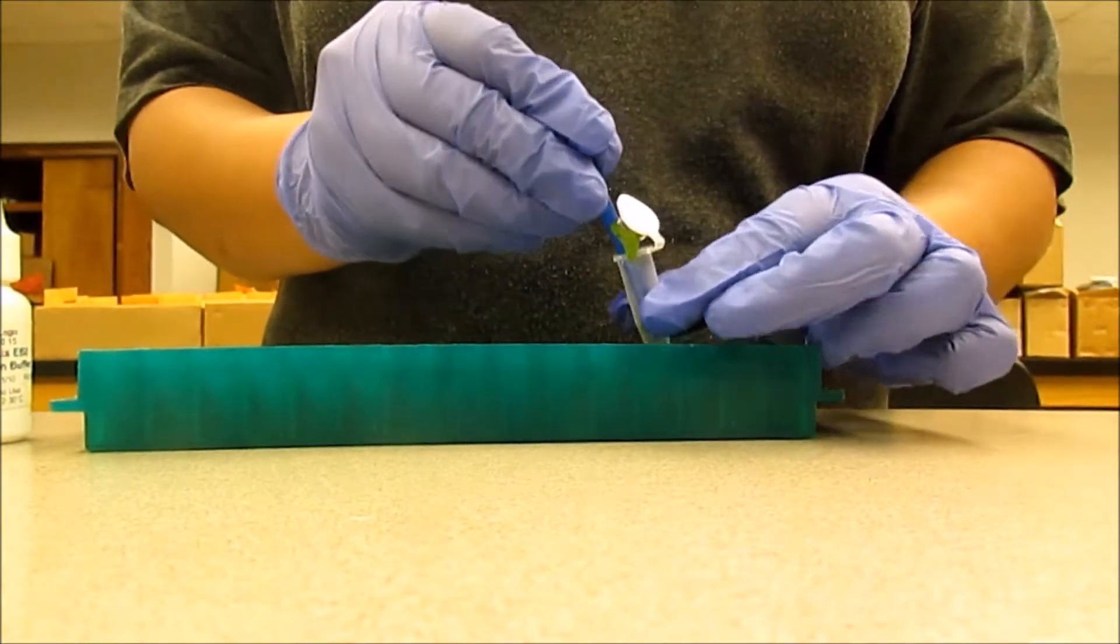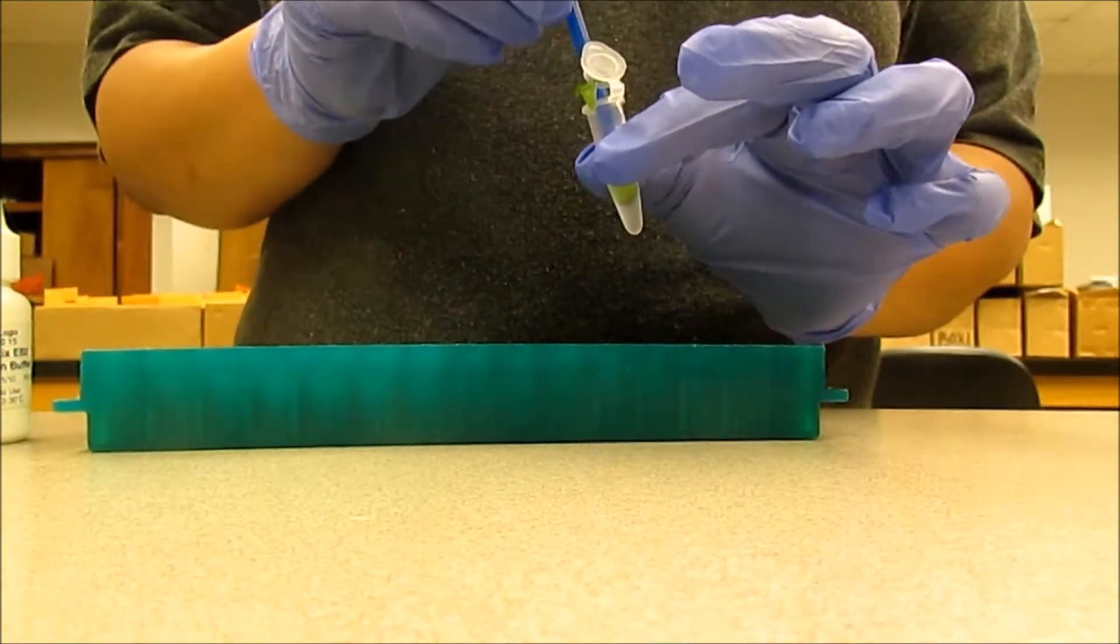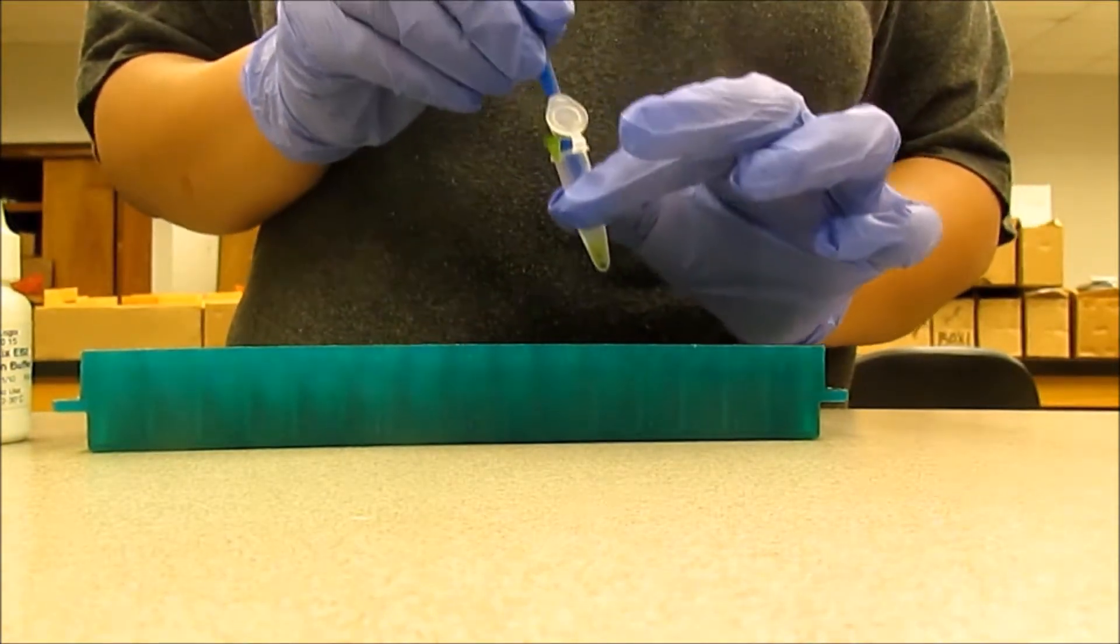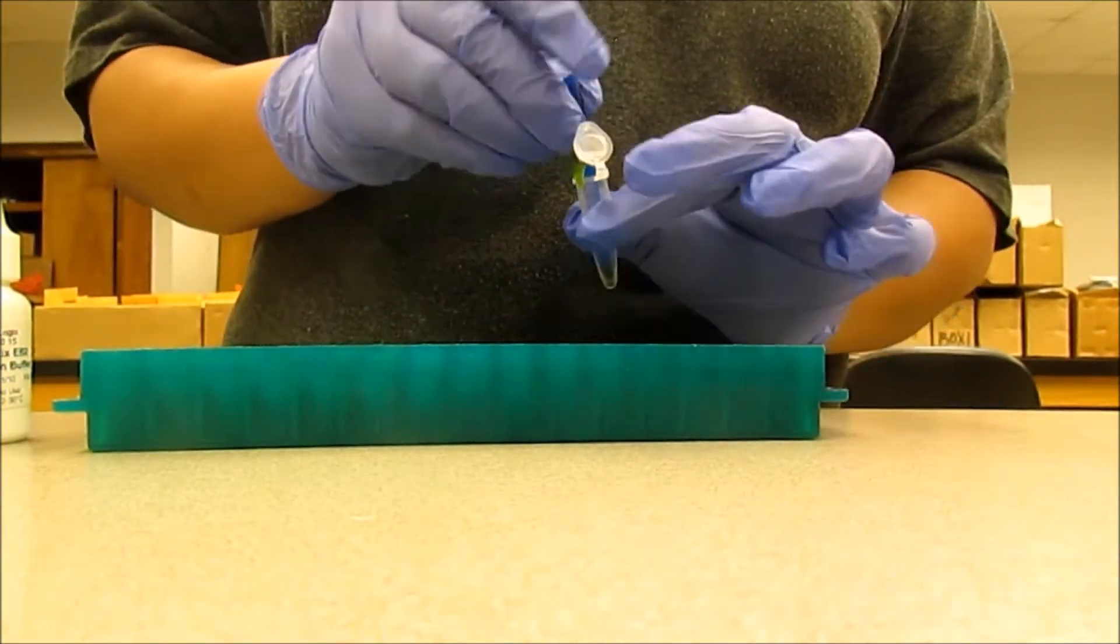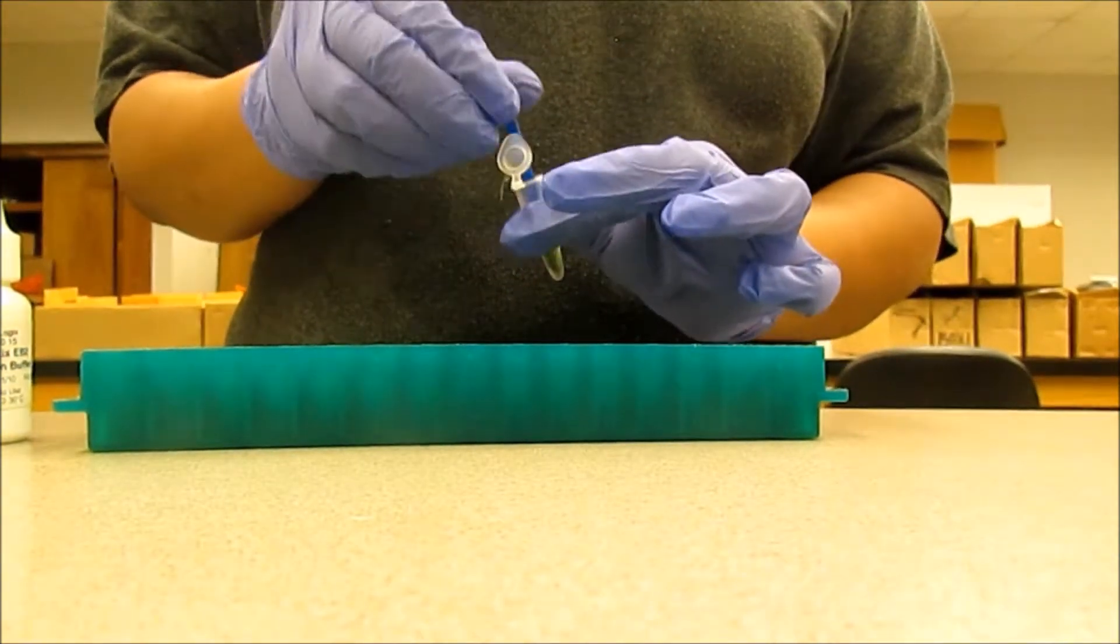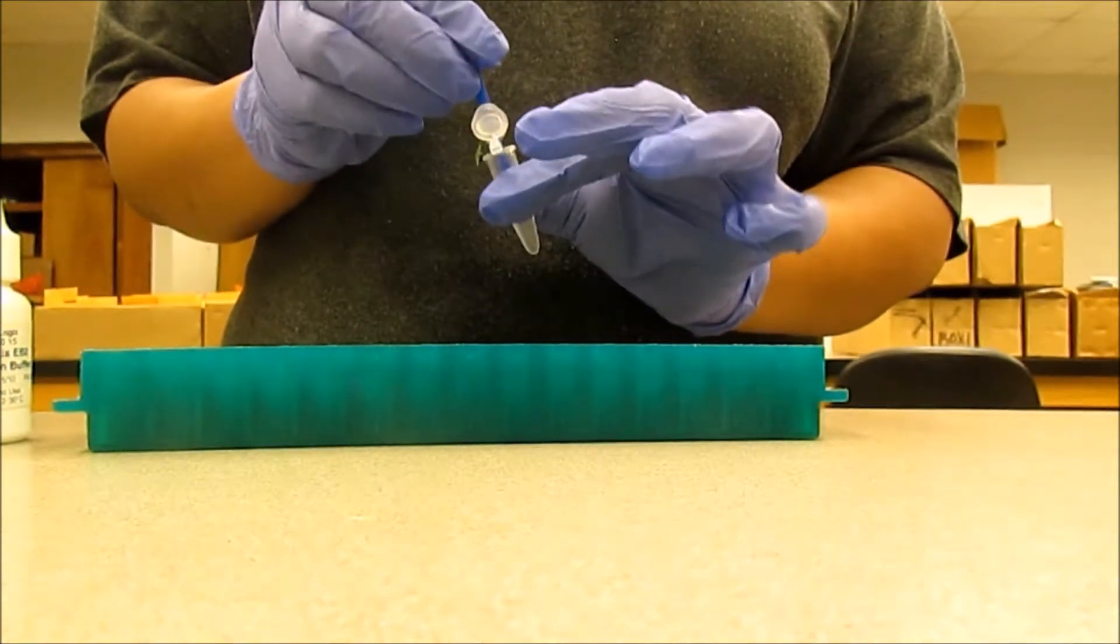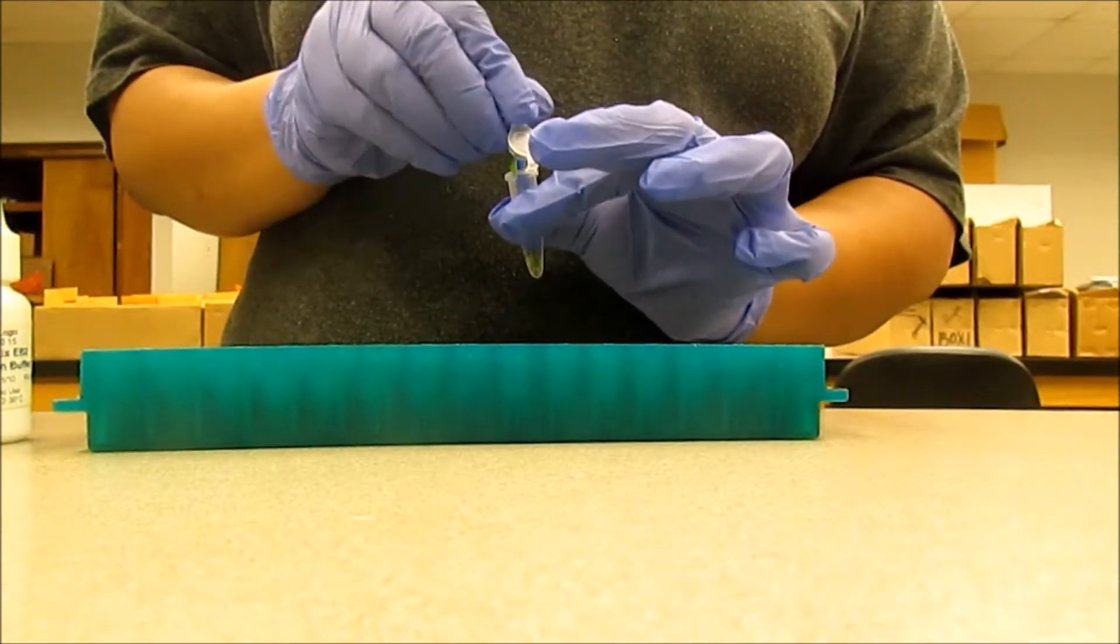After adding the buffer, we will take a pestle and grind the sample a little bit. We will take the sample into the buffer so that the proteins are extracted from the leaf. Make sure to grind the sample thoroughly.